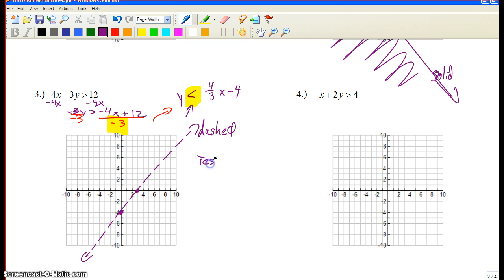Then we test a point. Test zero, zero. Remember, if true, we shade the side with zero, zero. If false, we shade the side without zero, zero. Okay, we can go back to the original again. Zero greater than 12? False. Shade the opposite side.